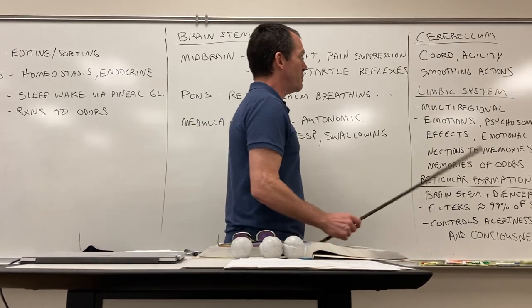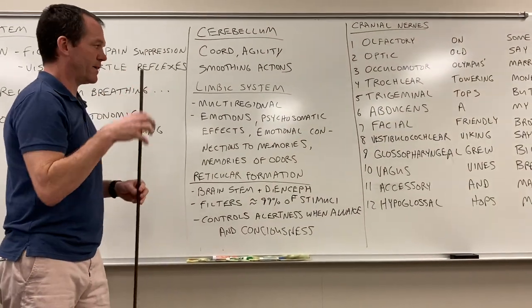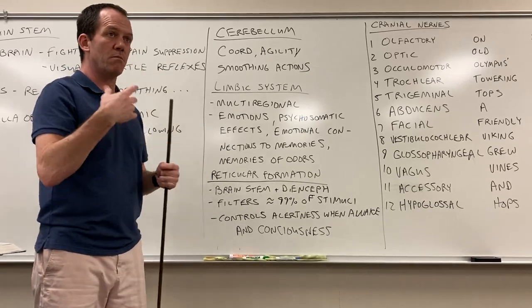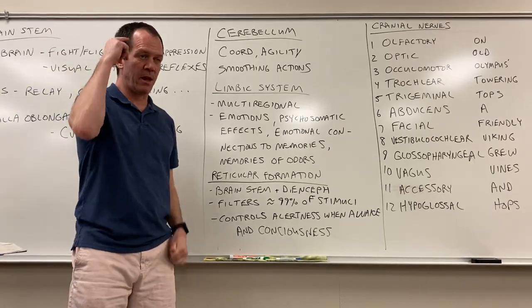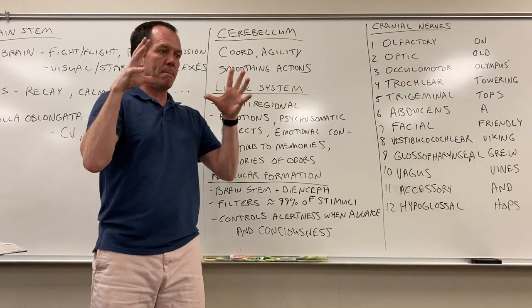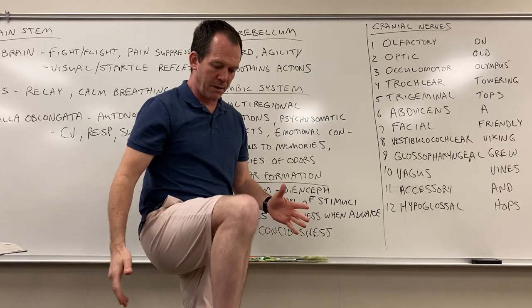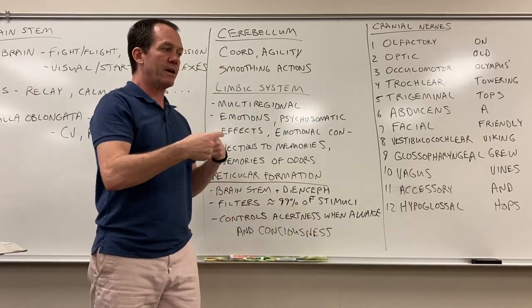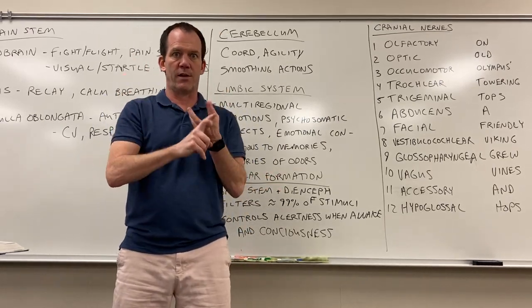The cerebellum is that little add-on in the back of your brain. It's a motor region, but it doesn't make you move — it helps make movement smooth. The primary motor cortex generates the movements. To make all that movement smooth, you need both the premotor cortex and the cerebellum.